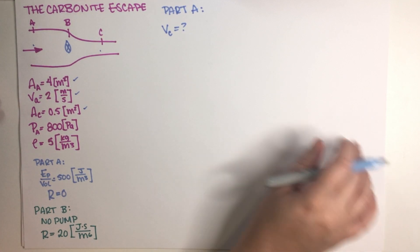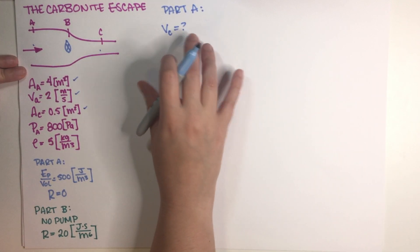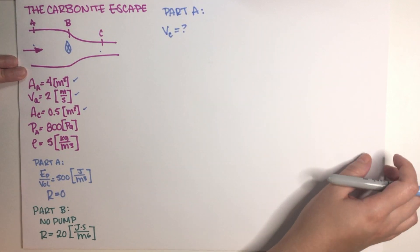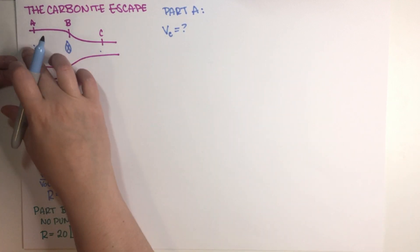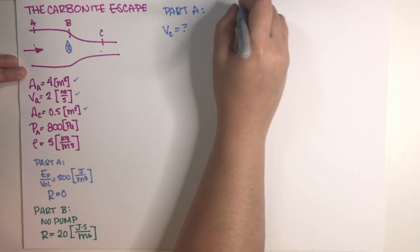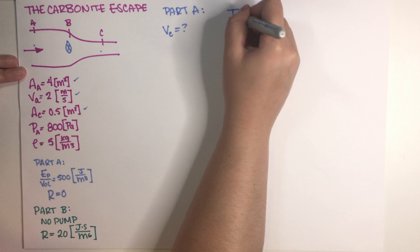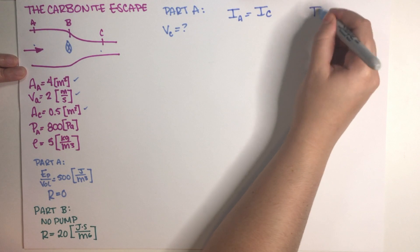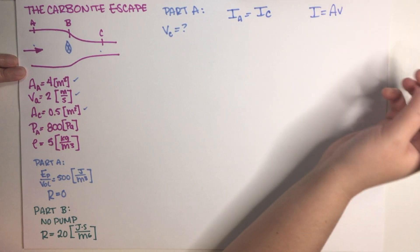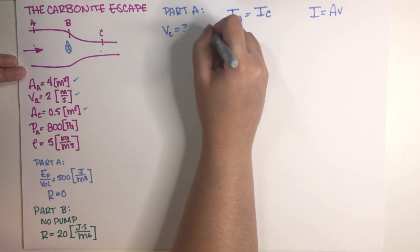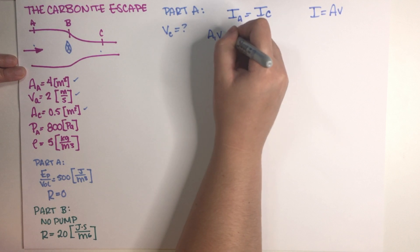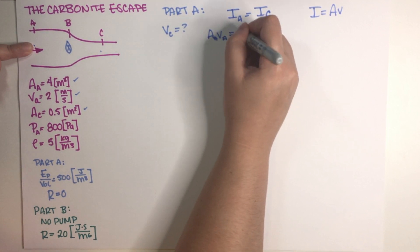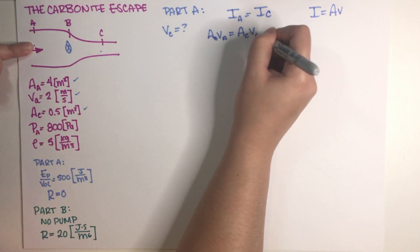Well, we do have an area and a velocity at this point, and we have an area at this point over here. So I think that the easiest way to solve for this velocity is actually to just use continuity. What comes in has to go out. This basically means that what goes in has to come out. And in terms of using our definition of area times velocity, this means area A velocity A is equal to area C velocity C.